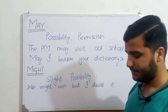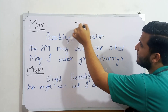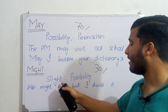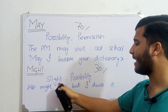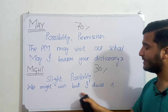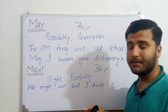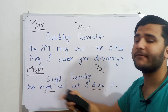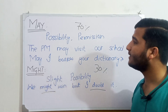'Might' has only one function: it shows slight possibility — the action has only a 30% chance of happening. For example, 'We might win, but I doubt it.' The word 'doubt' completely describes the function of 'might' — the speaker is not sure they will win. In this way you can use 'may' and 'might' appropriately.